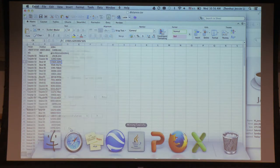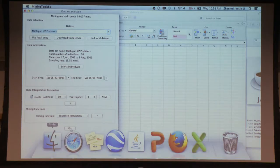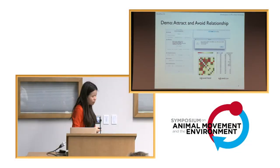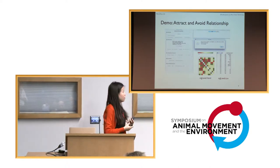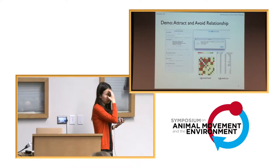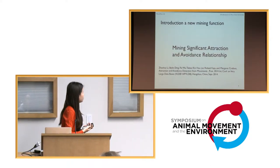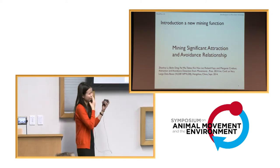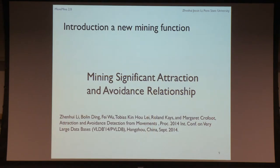That's not really the key thing I want to talk about today. I want to introduce two functions we recently developed. The first function is attraction-avoidance relationship mining. Before I show the demo, I want to briefly introduce the idea. This is based on a recent paper we collaborated on with Roland and Mac, published at the Very Large Database conference, one of the best conferences in the data mining community.